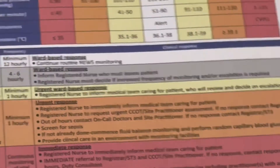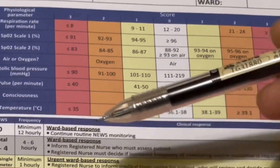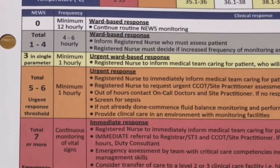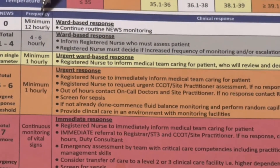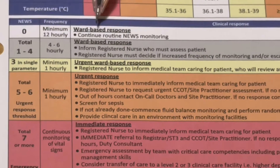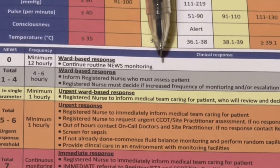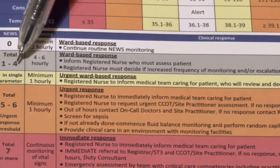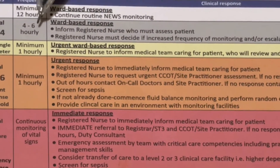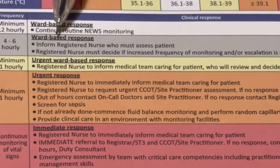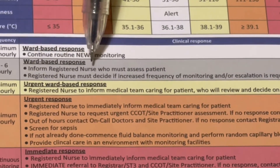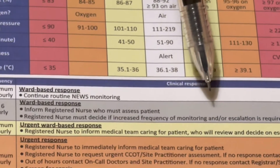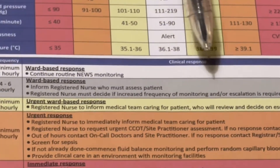Now let's go through the NEWS scores and frequencies in detail. If the NEWS score is zero, monitoring is 12 hourly with routine NEWS monitoring as a ward-based response. If the total score is 1 to 4, the frequency is 4 to 6 hourly, and a ward-based response means the registered nurse must be informed and decide if monitoring frequency needs to increase or if escalation is required.